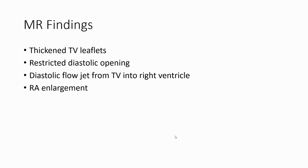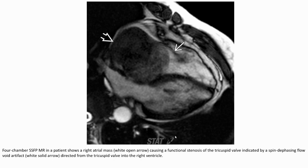MRI findings are similar to CT. We can find thickened tricuspid valve leaflets, restricted diastolic opening, and a diastolic flow jet from the tricuspid valve into the right ventricle with right atrial enlargement. In one case, a right atrial mass is shown causing functional stenosis of the tricuspid valve, indicated by a swirling flow directed from the tricuspid valve into the right ventricle.